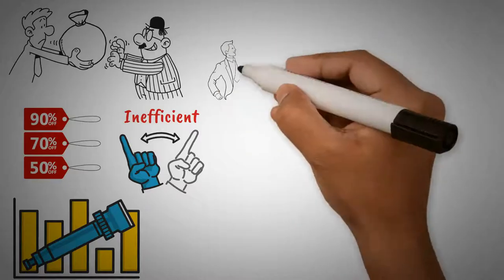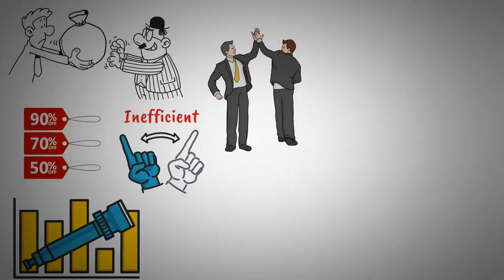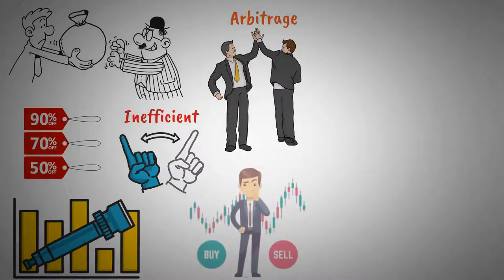Speculators take advantage of these price discrepancies through a practice called arbitrage. They buy an asset in one market and sell it in another, exploiting the minor differences in price and making a risk-free profit.